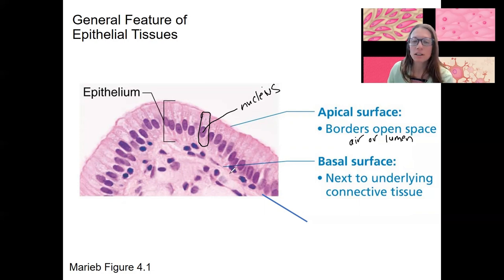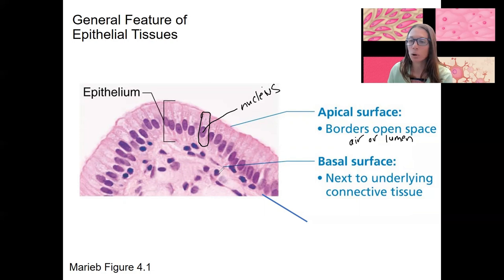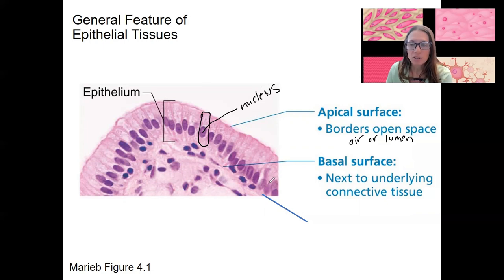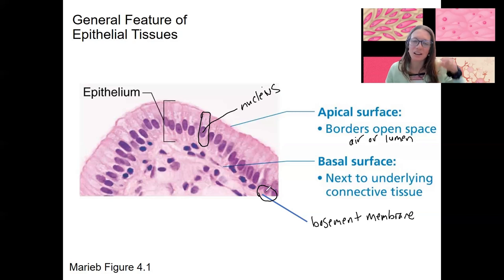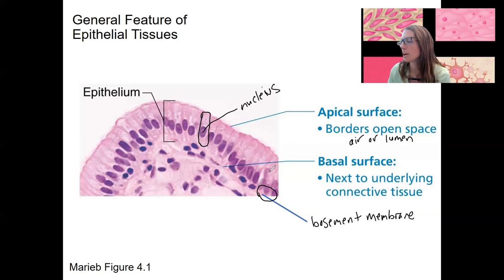The basal surface is on the other side — the bottom of the entire layer of epithelial tissue. This basal surface is often next to connective tissue. Together, the basal surface and the connective tissue form what is called the basement membrane — made up of the bottom layer of epithelial tissue and the connective tissue that underlies it.